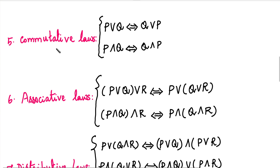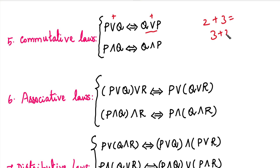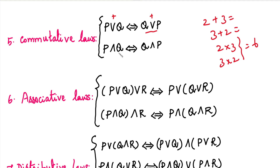The next law is the commutative law. In commutative law, we have two forms: P OR Q and Q OR P — these are the same. Similarly for AND. Just like in arithmetic, two plus three equals three plus two; the value is the same.